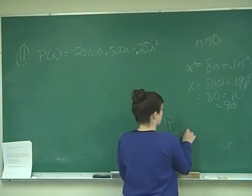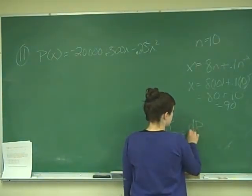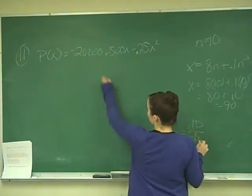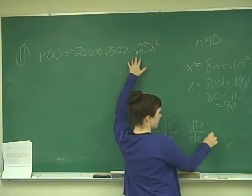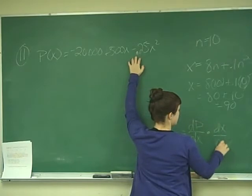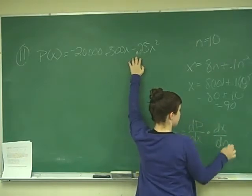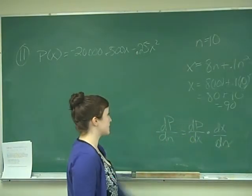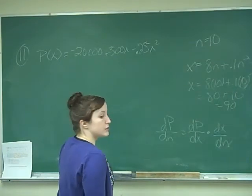Which in our case would be equal to dp over dx, which is what we will take the derivative of here, times dx over dn. So that's why we need to find x.